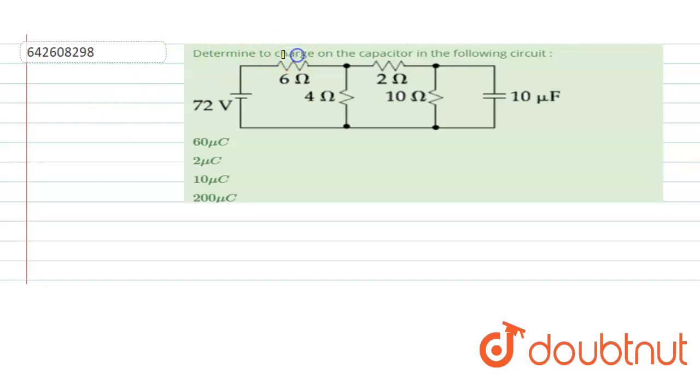We are given a battery of 72 volts with 6 ohm, 4 ohm, 2 ohm, and 10 ohm resistances connected, and this is a 10 microfarad capacitor which is connected.